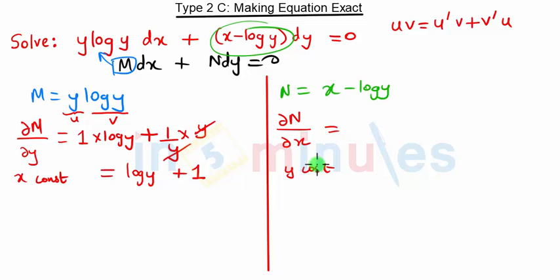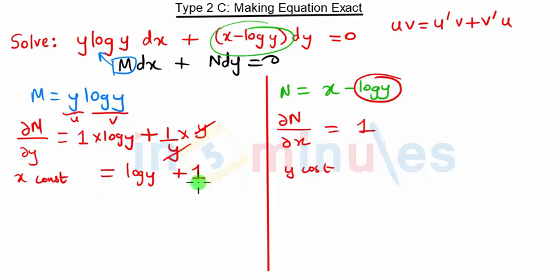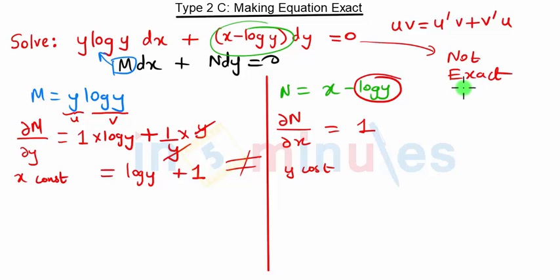For ∂N/∂x, y is constant so the log(y) term is 0, and the derivative of x is 1. So ∂N/∂x = 1. Since the two partial derivatives are not equal, the given differential equation is not an exact differential equation.